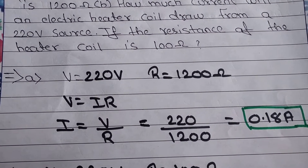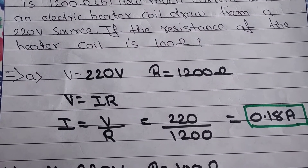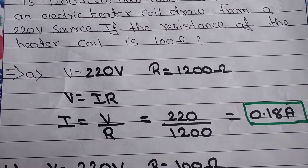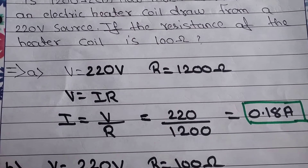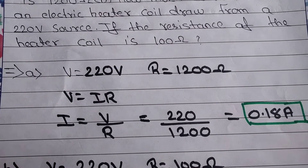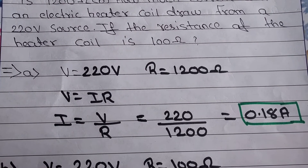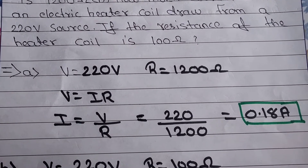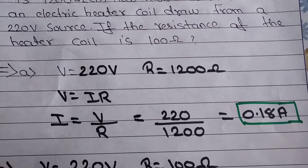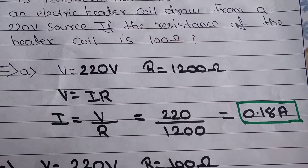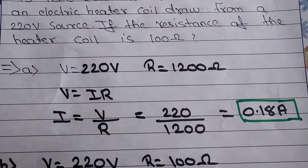According to Ohm's law, V equals IR. So V is 220 volt and R equals 1200. We have to find I. So I equals V upon R. Putting the values: V equals 220 volt and R equals 1200. Dividing both terms, we get 0.18 ampere. So the value of current is 0.18 ampere.